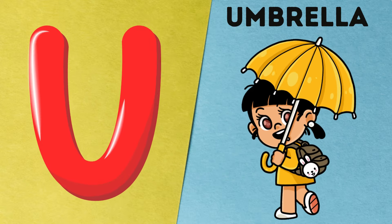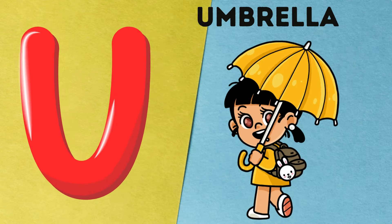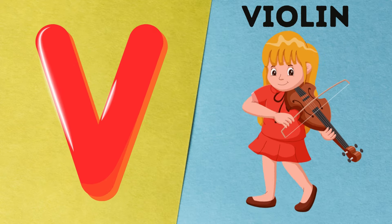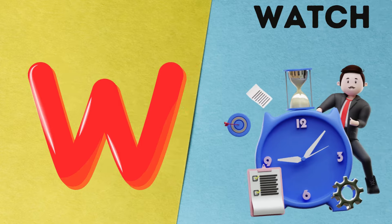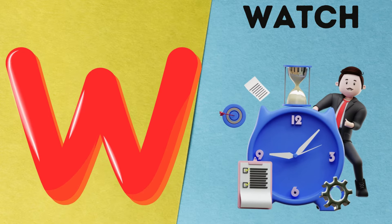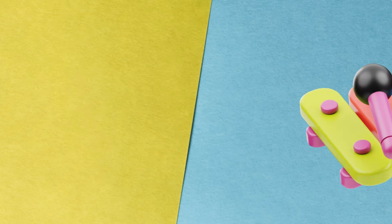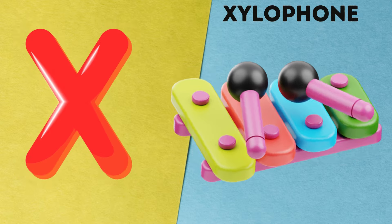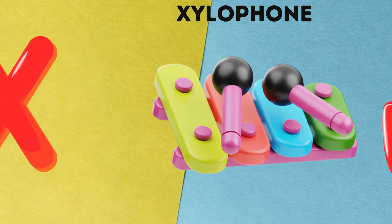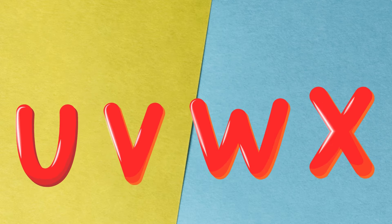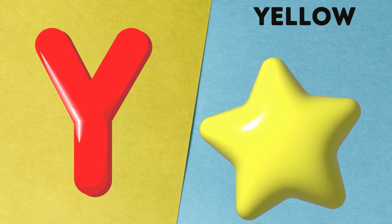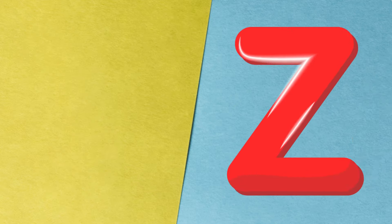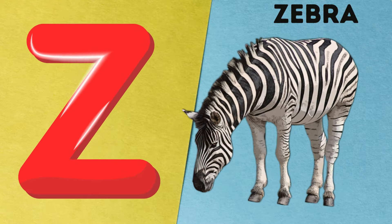U is for umbrella, u-u-umbrella. V is for violin, v-v-violin. W is for watch, w-w-watch. X is for xylophone, z-z-xylophone. Y is for yellow, ye-ye-yellow. Z is for zebra, z-z-zebra.